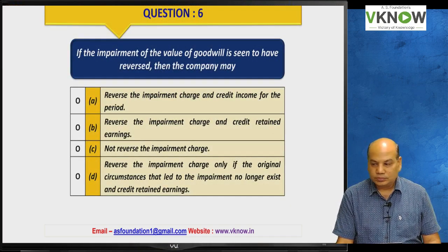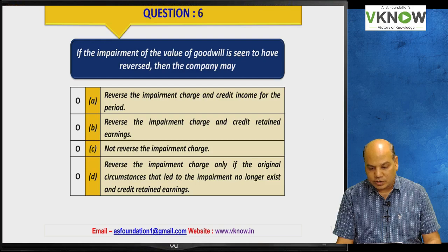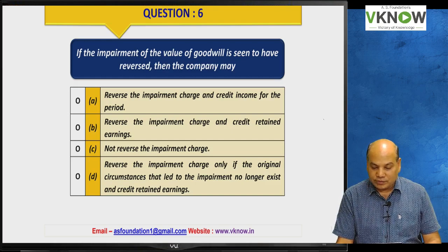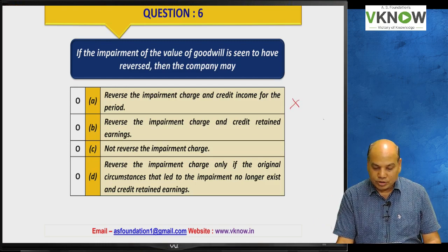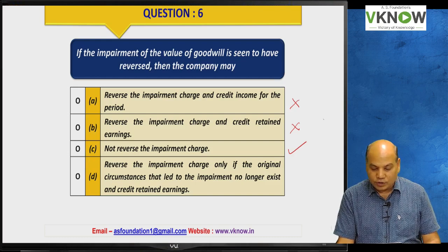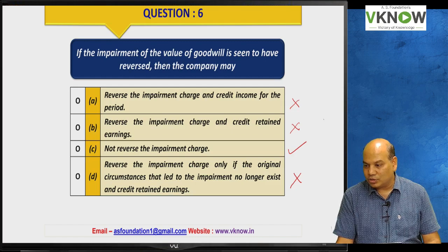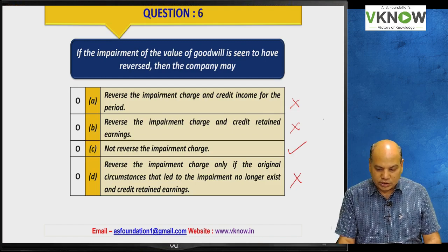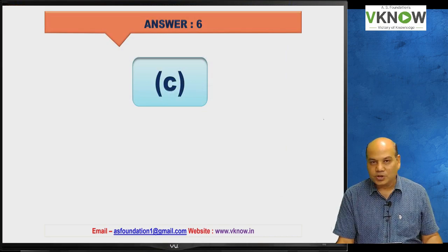Question number six: If the impairment of goodwill is seen to have reversed, what happens? Goodwill impairment cannot be reversed. Any option that mentions reversing the impairment charge is wrong. Reversal is not allowed as it would amount to creating self-generated goodwill. Whenever an option talks about reversal, that option is wrong. The correct answer is option C.